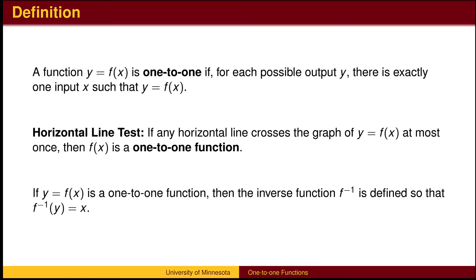A one-to-one function has just one input for each output. This allows us to define the inverse function. If each y output of the original function corresponds to only one x input, then each y input to the inverse function will correspond to a single x output.